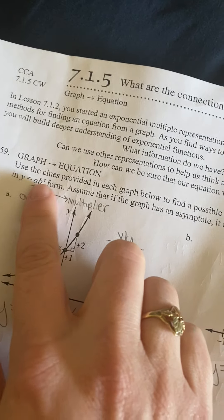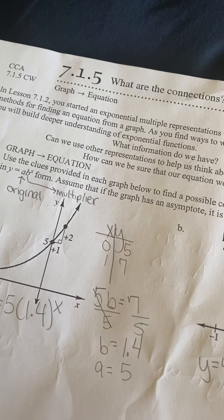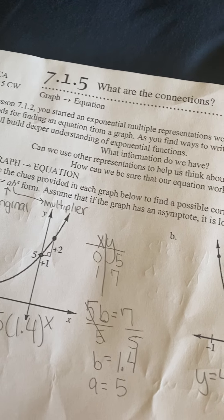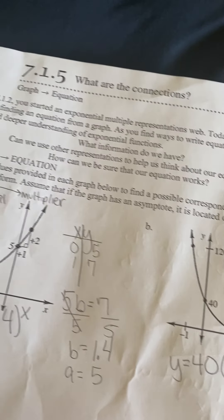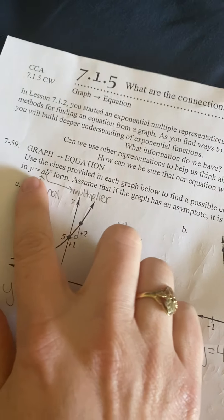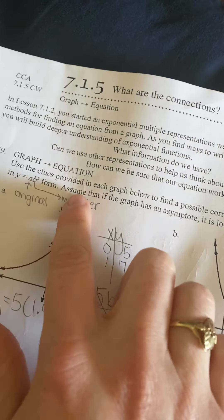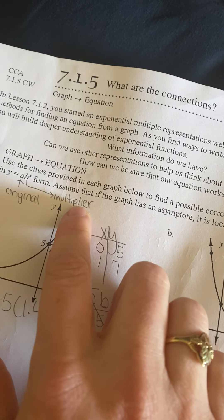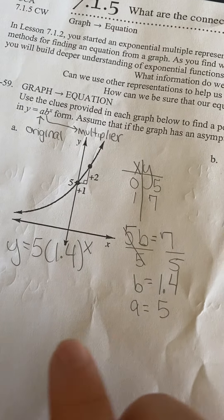So basically what we're going to do, I'm going to start down here. Use the clues provided in each graph below to find a possible corresponding equation in y equals ab to the x form. Assume that the graph has an asymptote located on the x-axis. Remember, when we have y equals ab to the x, a is the original number and b is the multiplier. We want to come up with that equation given the graph.